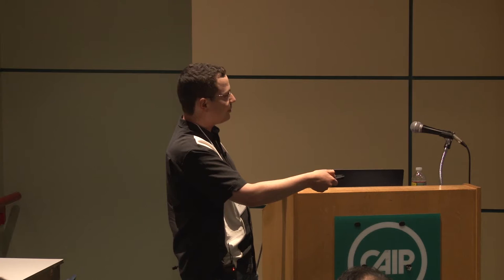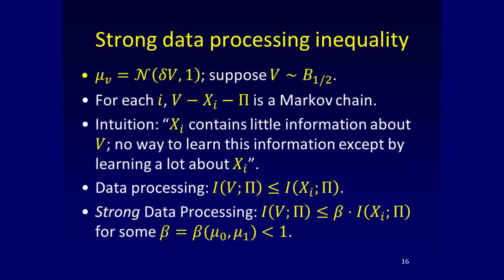The standard data processing inequality says pi cannot tell us about v more than it tells us about x_i, because everything it learns comes through that channel. The strong data processing inequality says there is a conversion factor beta: we learn about v beta times less than what we learn about x_i. So in order to get one-thousandth of a bit about v, we'll have to get one-tenth of a bit about x_i.